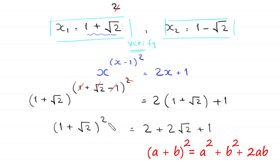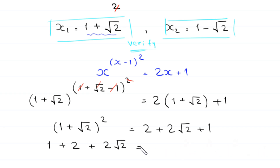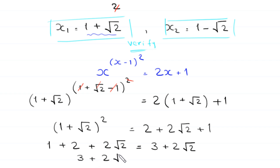Expanding 1 plus root 2 whole squared gives 1 plus 2 root 2 plus 2, which equals 3 plus 2 root 2. On the right side, 2 plus 1 is 3 plus 2 root 2. Left-hand side equals right-hand side, so the solution x₁ equals 1 plus square root of 2 is valid.